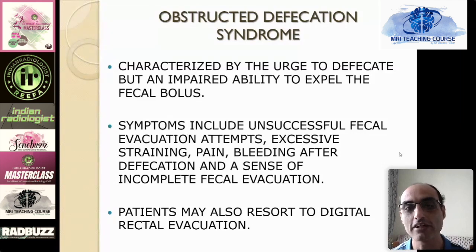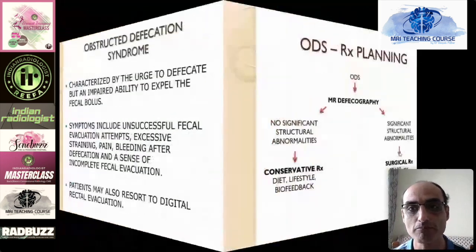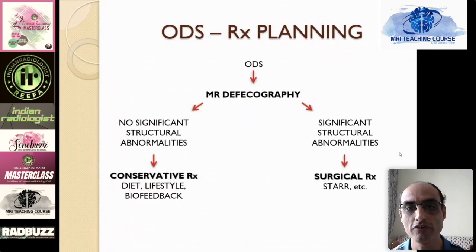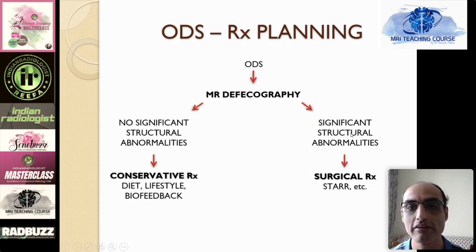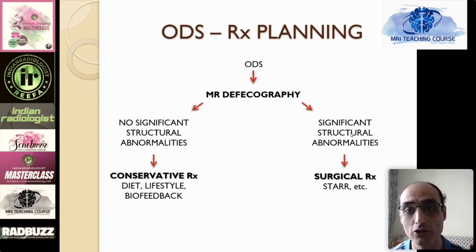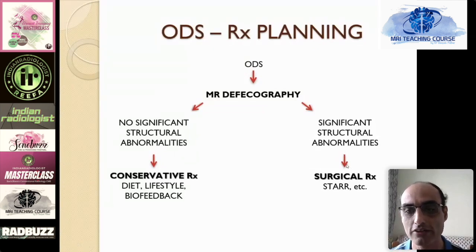Surgeons have taken a lot of interest in ODS and MR defecography and we radiologists should catch up. MR defecography divides these patients into two distinct categories. One is the group of patients who show significant structural abnormalities — these could be rectoceles, rectorectal intussusceptions, rectal prolapse, enterocele, pelvic descents, and so forth. These patients can then be offered specific surgical treatment for those specific structural abnormalities.